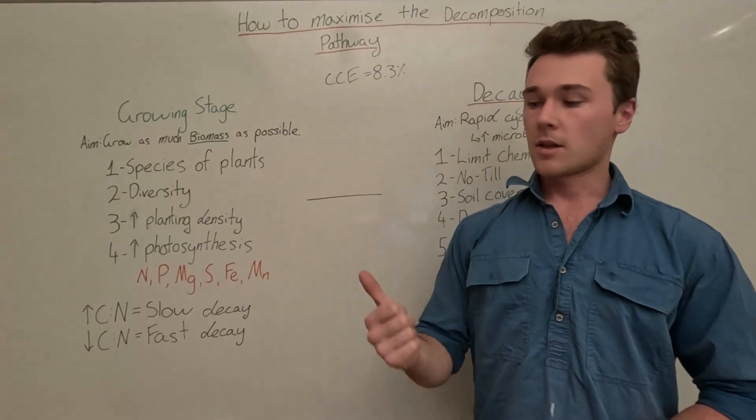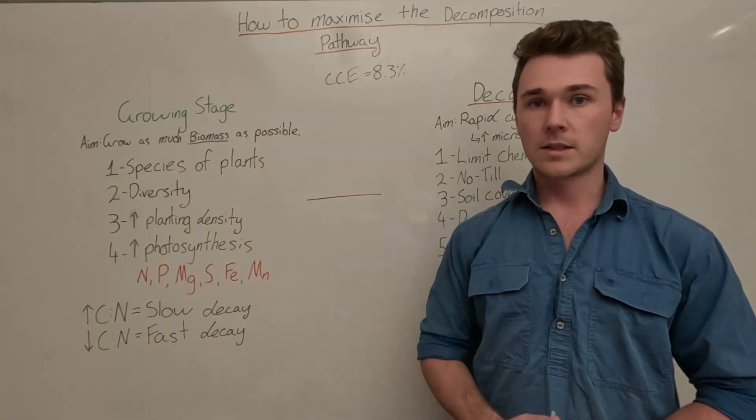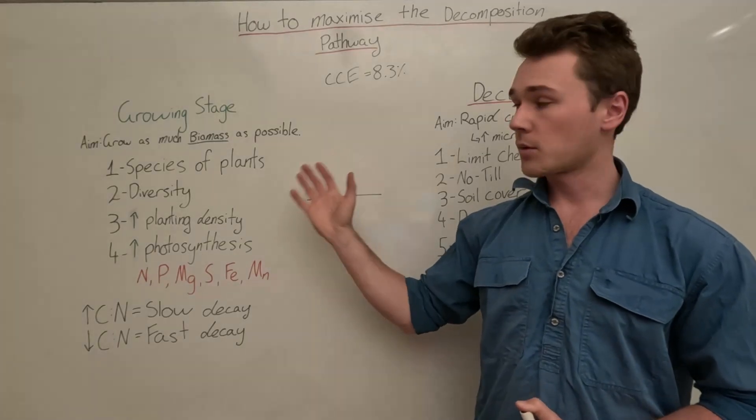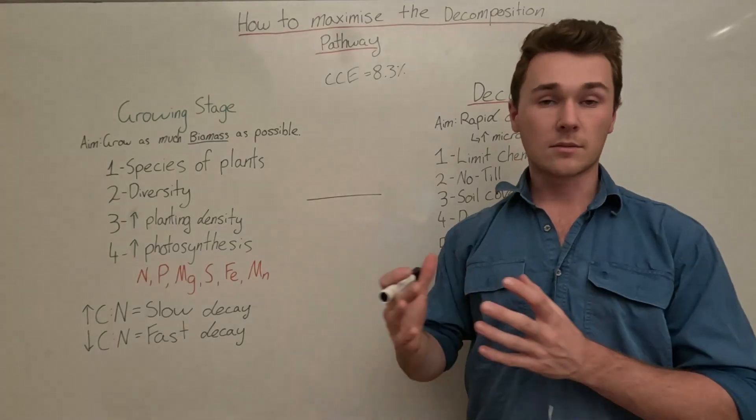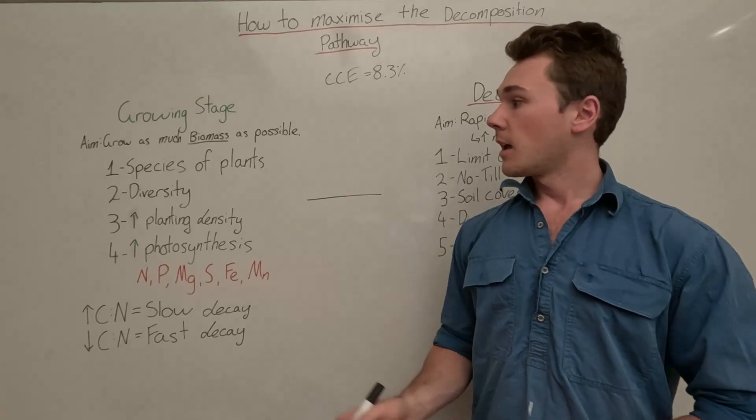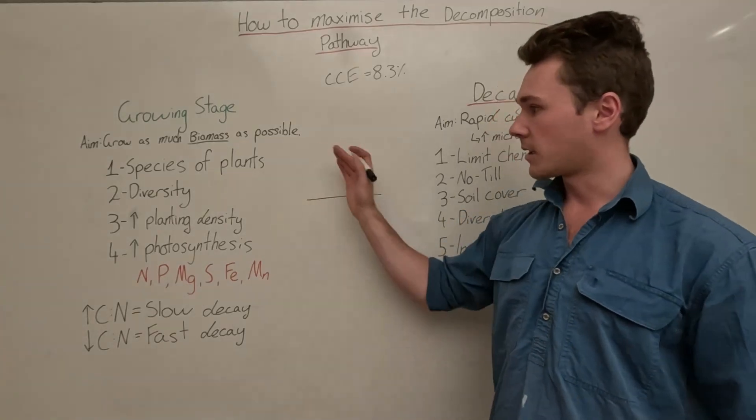So we want to maximize biomass production. How can we do that? Firstly, the species that we're using. We want to probably use C4s, more tropical species. They can produce a lot more biomass than our C3s, but generally species of plants in our cover crops or green manure crops, plants that produce a lot of biomass. That's the first key.